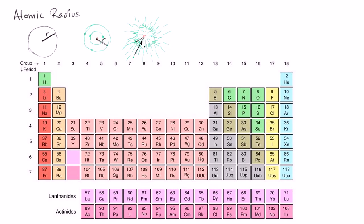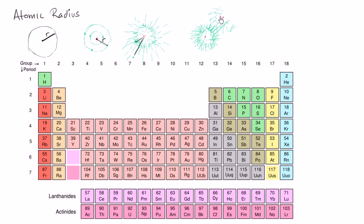There are several techniques for thinking about this. One technique is: if you have two atoms of the same element that are not bonded to each other, not part of the same molecule, and you determine the closest you could get them to each other without them bonding — that minimum distance — and then take half of that. That's one notion, and it's actually called the van der Waals radius.